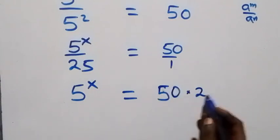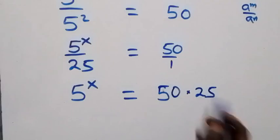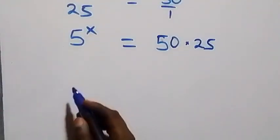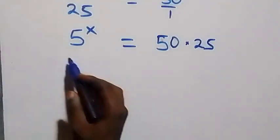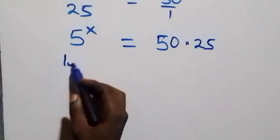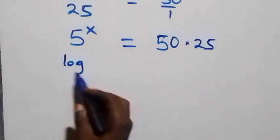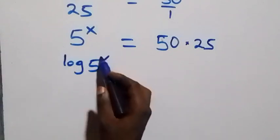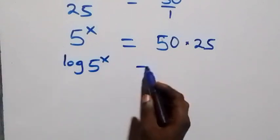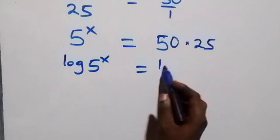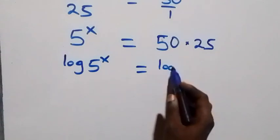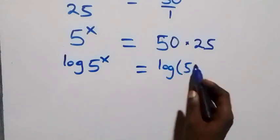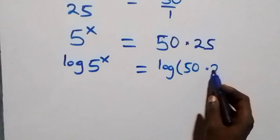Then next step, we take the log on both sides. That is, we have log of 5 raised to power x equals to log of 50 times 25.